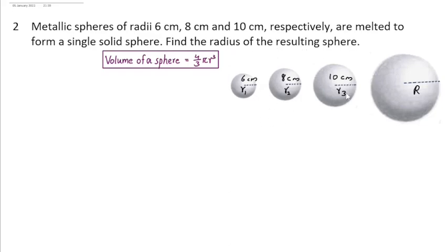These three metallic spheres are melting to make a single solid sphere. The radius of the first sphere is 6 cm, and 8 cm and 10 cm are the radii of the 2nd and 3rd spheres respectively.